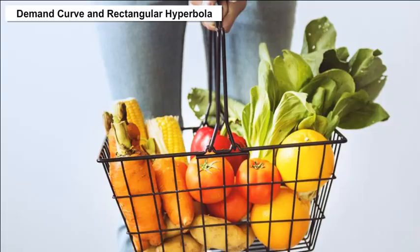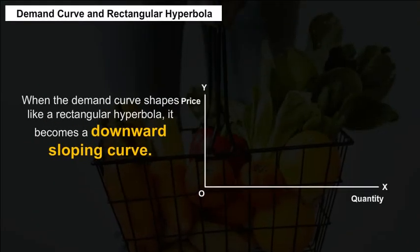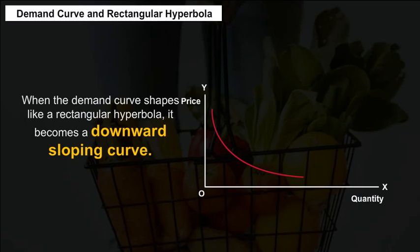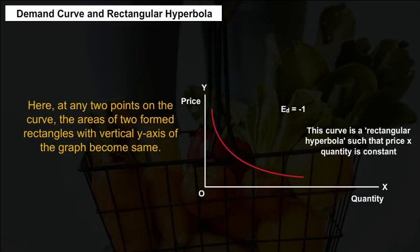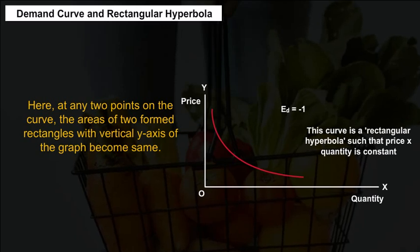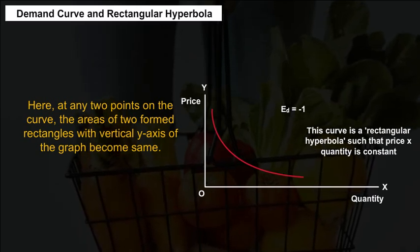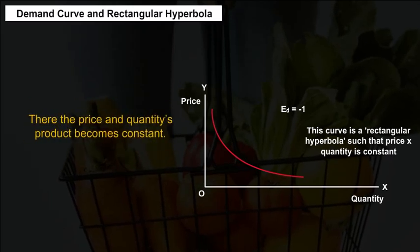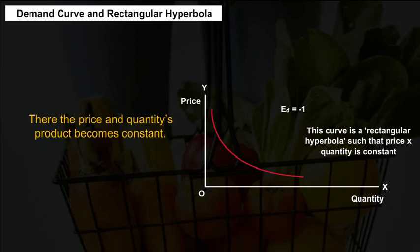Demand curve and rectangular hyperbola: When the demand curve shapes like a rectangular hyperbola, it becomes a downward-sloping curve where, at any two points on the curve, the areas of the two rectangles formed with the vertical y-axis become equal, and the product of price and quantity remains constant.